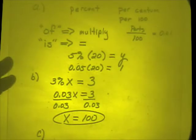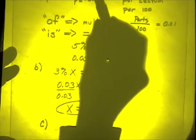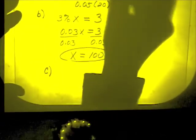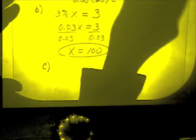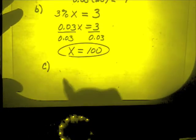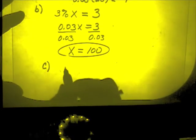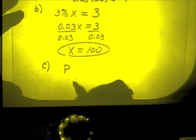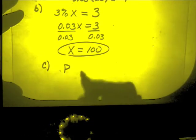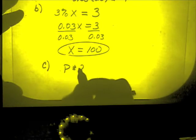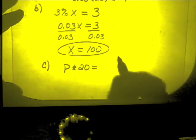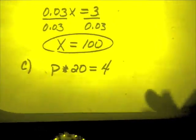We don't know the percent. We know we're starting off with 20. When we take a certain percent of it, we're going to end up with 4. So let's see here. I don't know the percent. I think I'm going to let the variable p stand for percent. Because that's the thing I don't know. Of means times, so p times 20 is equal to 4.